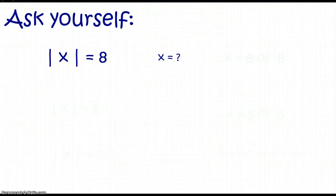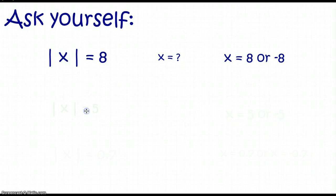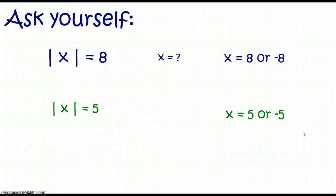As we look at some of these other examples, think in your head — what would the answers be? If the absolute value of X is 8, what values could X have? X could have a value of 8 or negative 8. If the absolute value of X is 5, X could have a value of 5 or negative 5.